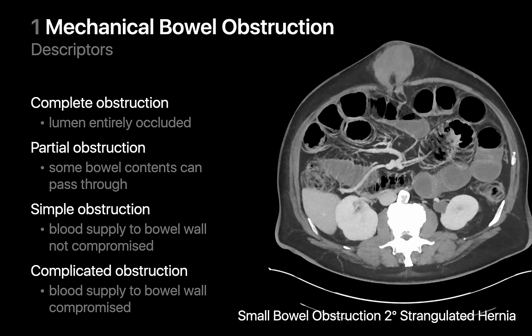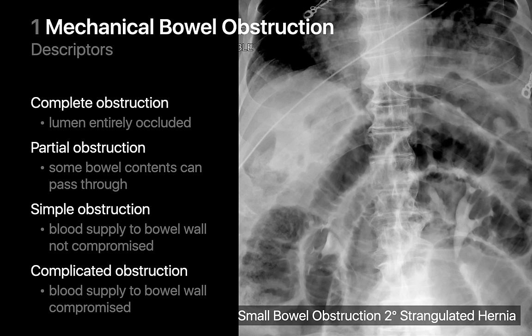Here's an example of a strangulated hernia on CT, where a short segment of small bowel became trapped in the anterior abdominal wall after passing through a small defect in the muscular layer. Due to the small defect size, the afferent and efferent small bowel segments have become obstructed. Bowel obstructions where two points along a segment of bowel are obstructed at a single location are called closed loop obstructions — in this case, the small bowel segment trapped in the anterior abdominal wall superficial to the muscular wall.